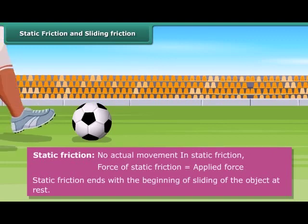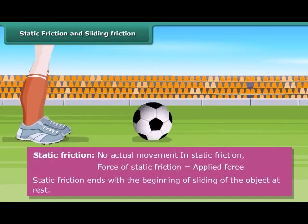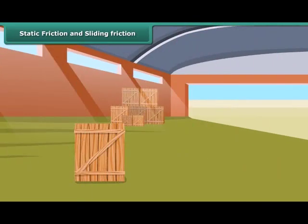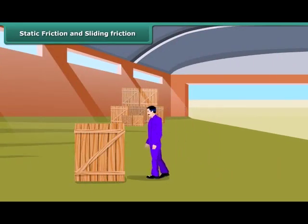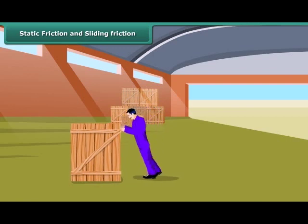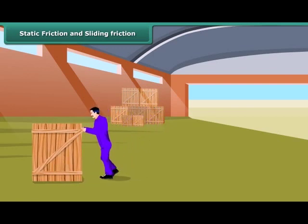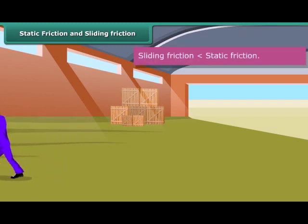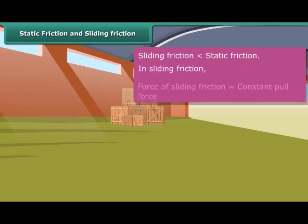Static friction ends with the beginning of sliding of the object at rest. When we push the ball, it starts moving. The frictional force present when one body moves slowly or slides over another body is known as sliding friction. Once a body slides, the sliding friction is reduced a little — it is less than the static friction. In sliding friction, the force of sliding friction is equal to the constant pull force.